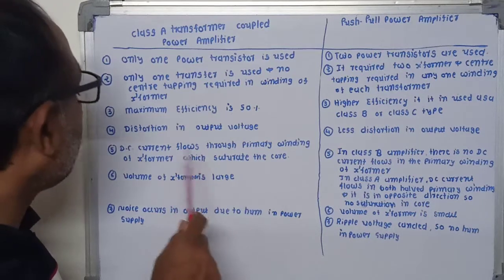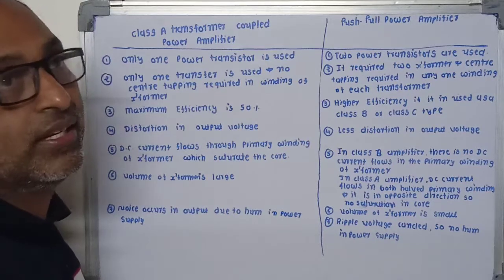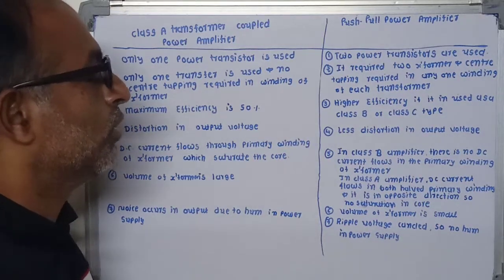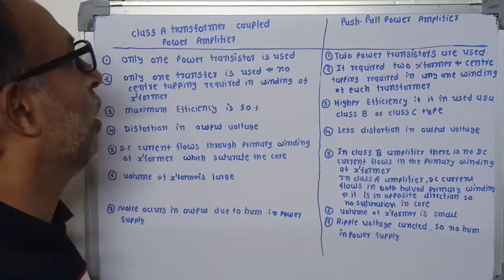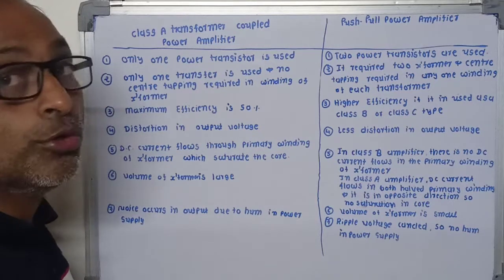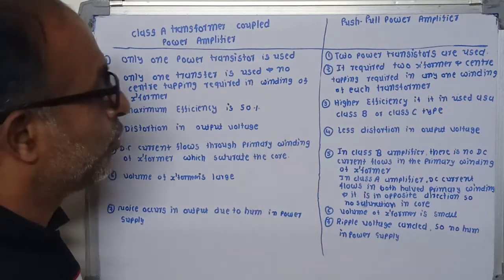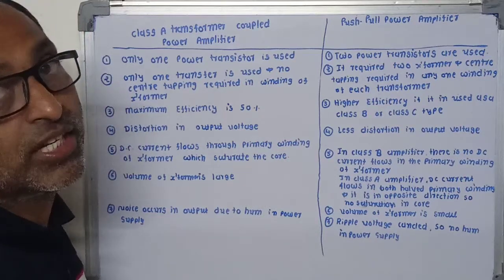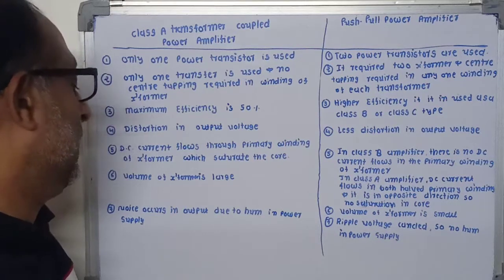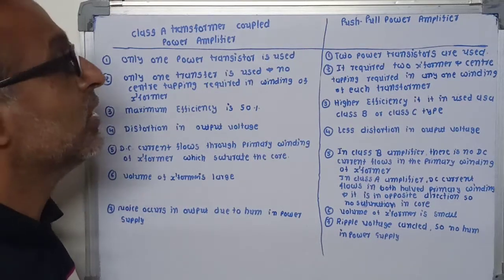Due to core saturation in Class A, the volume of the transformer is very large, but in push-pull the volume of the transformer is small. In Class A, noise occurs in the output due to the hum present in the power supply, but in push-pull, ripple voltage cancels, so there is no noise in the output signal.